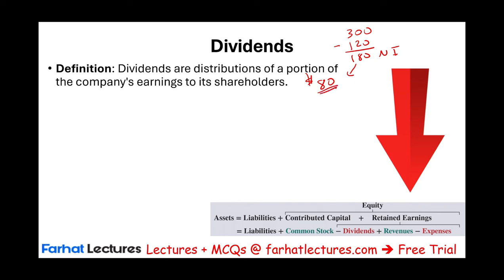Choice D says decrease in asset — absolutely not, because the company received cash, and cash is an asset, so assets went up, not down. The correct answer is A: increase in asset and increase in equity. For additional multiple choice questions and resources to help you understand the accounting equation, visit FarhatLectures.com. This is a foundation chapter for financial accounting. Good luck, study hard, and of course stay safe.